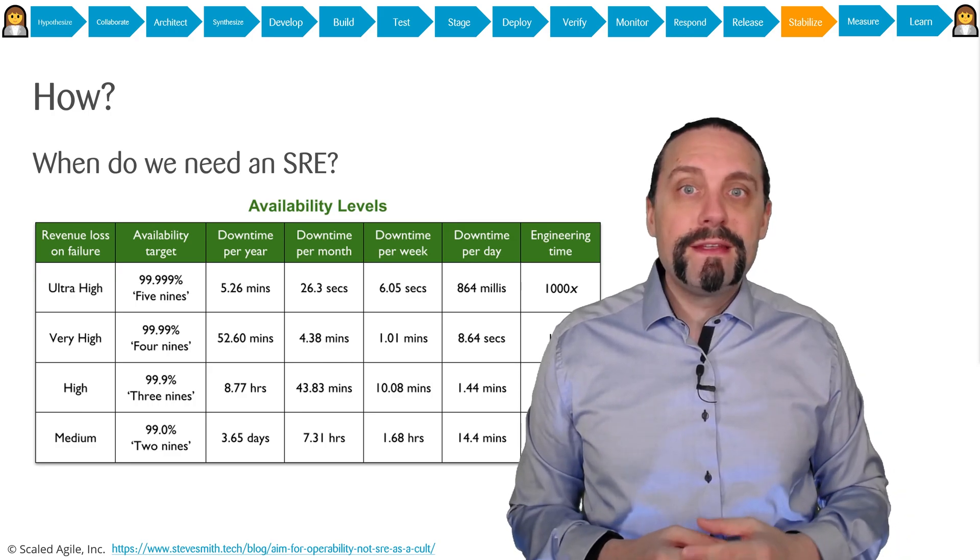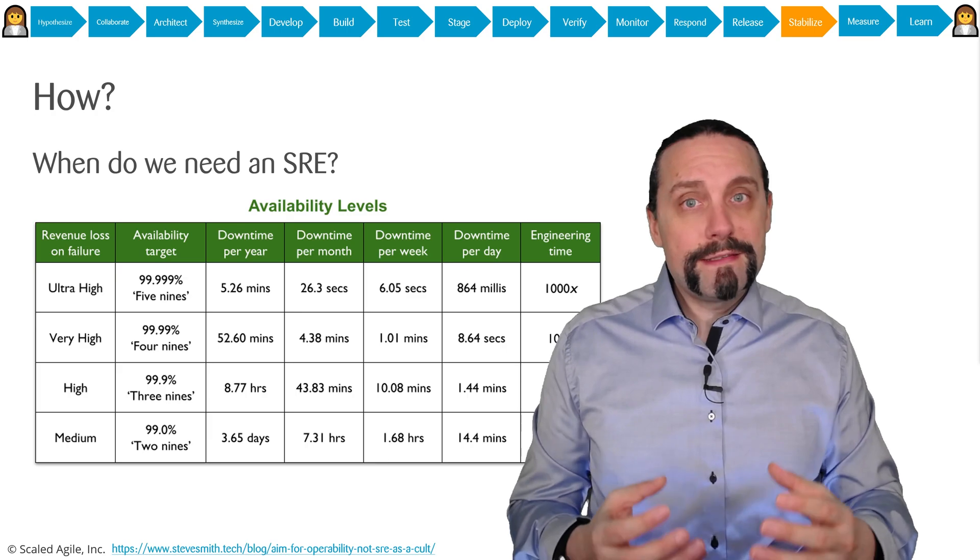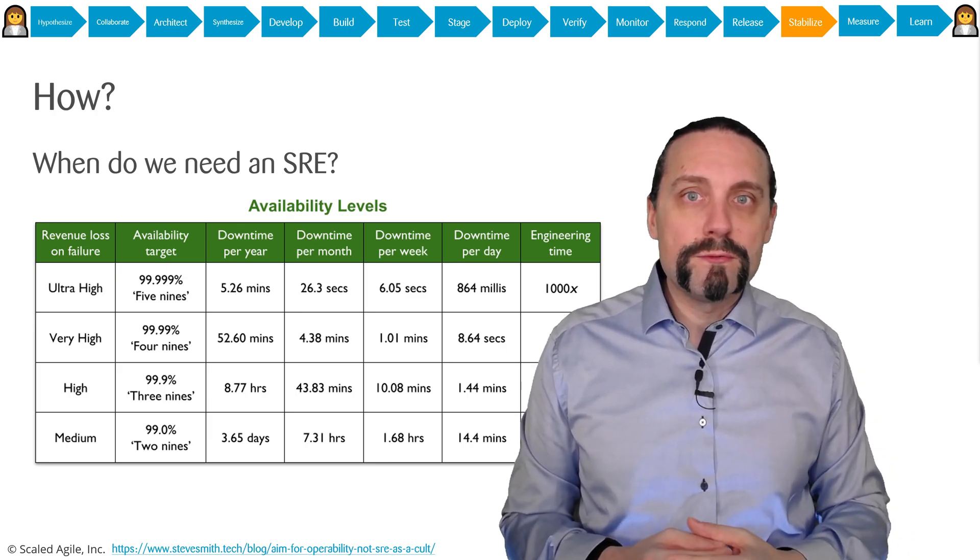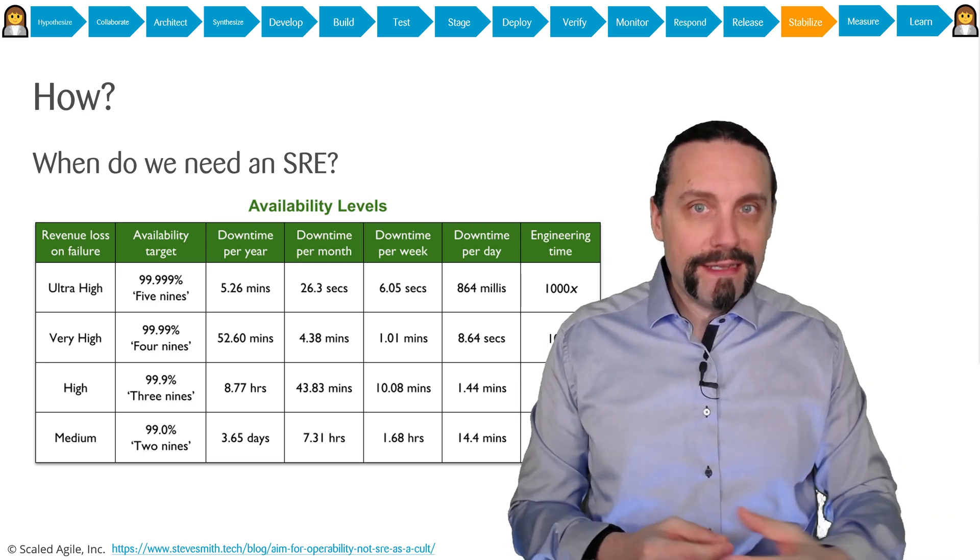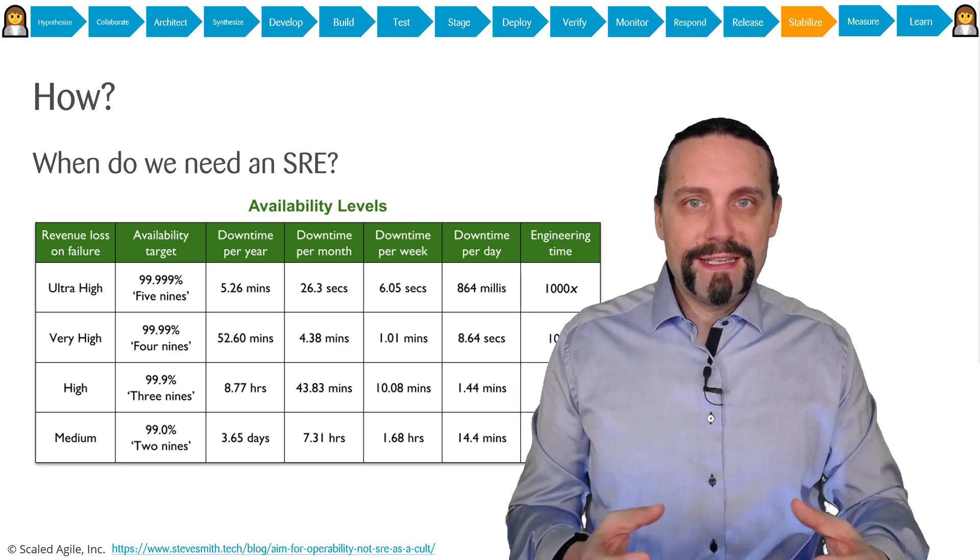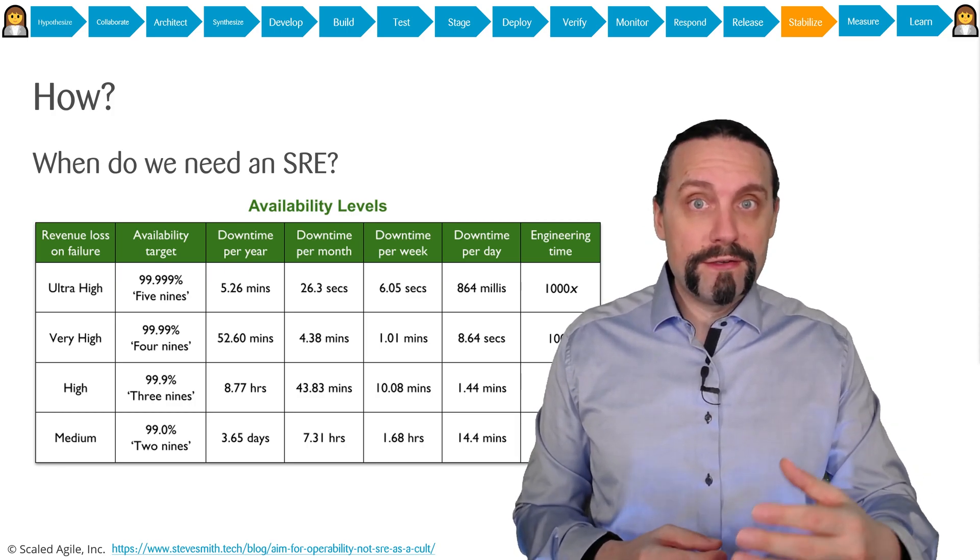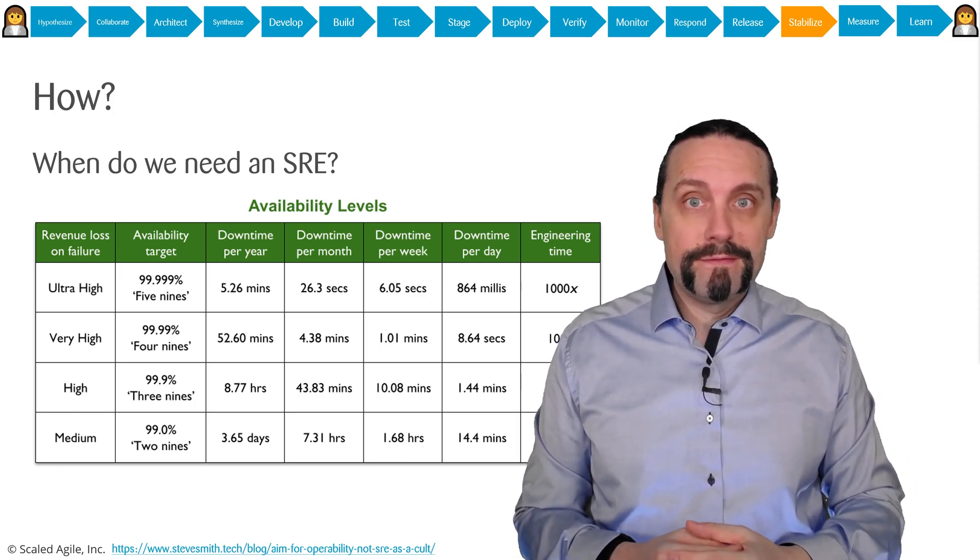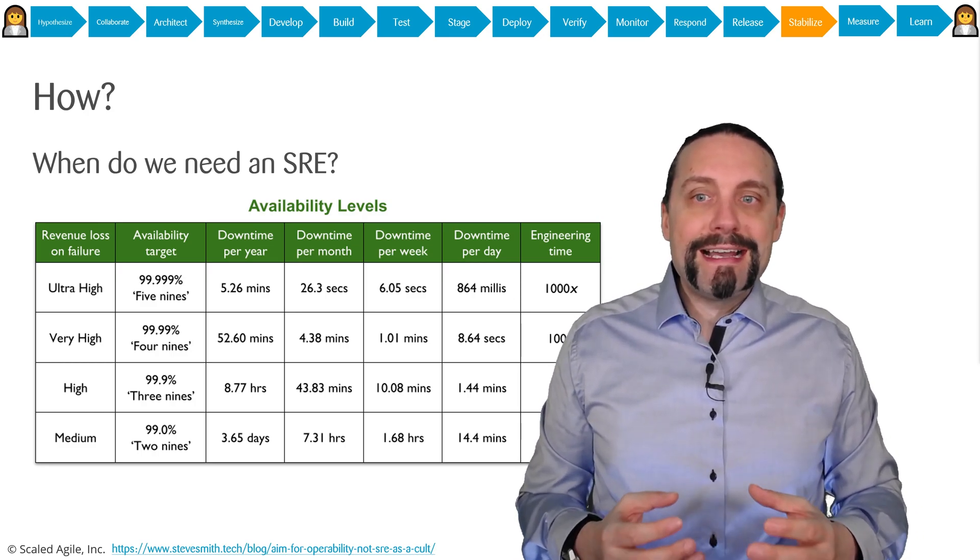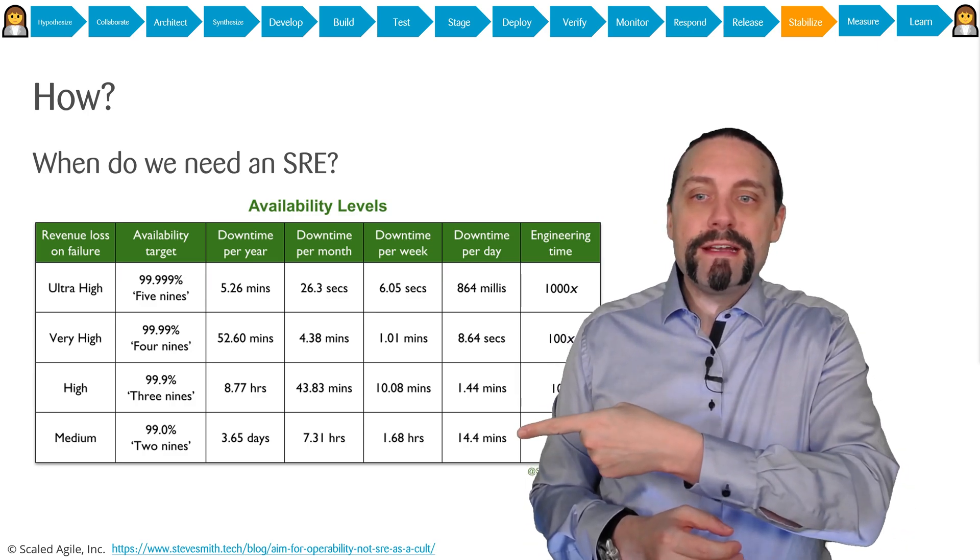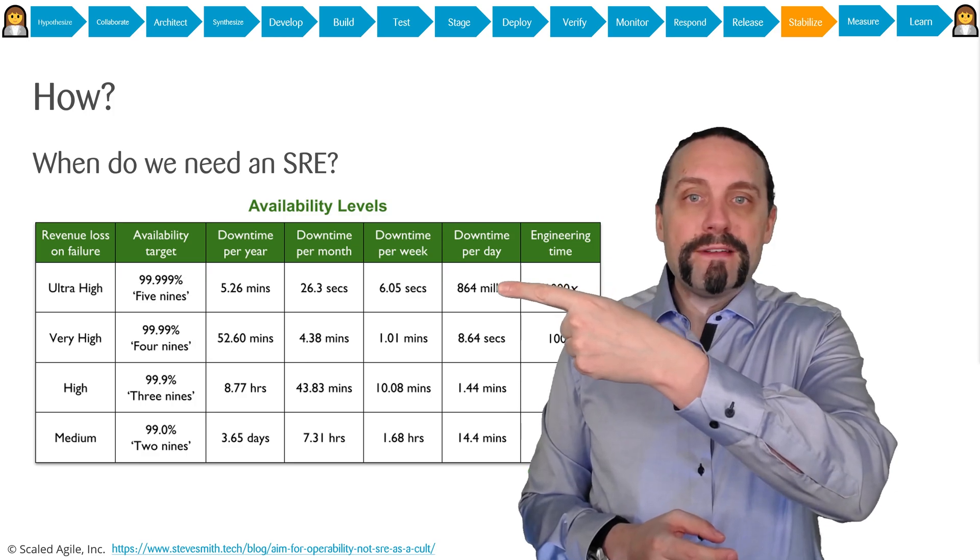Availability is a non-functional requirement. This non-functional requirement is used in an SLI, which is a service level indicator, which is then used as an SLO, a service level objective. The service level objective is then defined as an availability target which ranges from two nines to five nines.